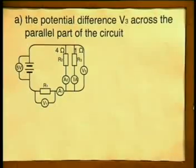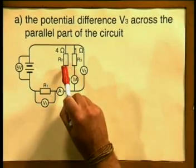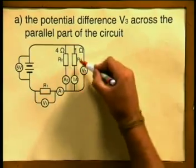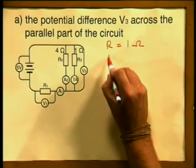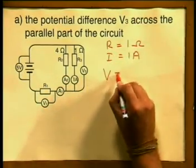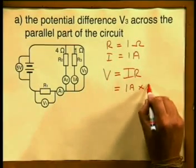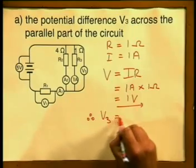What are the rules about potential difference in a parallel circuit? The potential difference across a parallel circuit is the same as the potential difference across each branch in that circuit. We are asked to calculate the potential difference V3 across the parallel part of the circuit. We know that the value of R3 is equal to 1 ohm and the current passing through R3 is equal to 1 ampere. Applying V is equal to I times R — 1 ampere multiplied by 1 ohm equals 1 volt. Therefore, by our rules of parallel circuitry, V3 must also equal 1 volt.